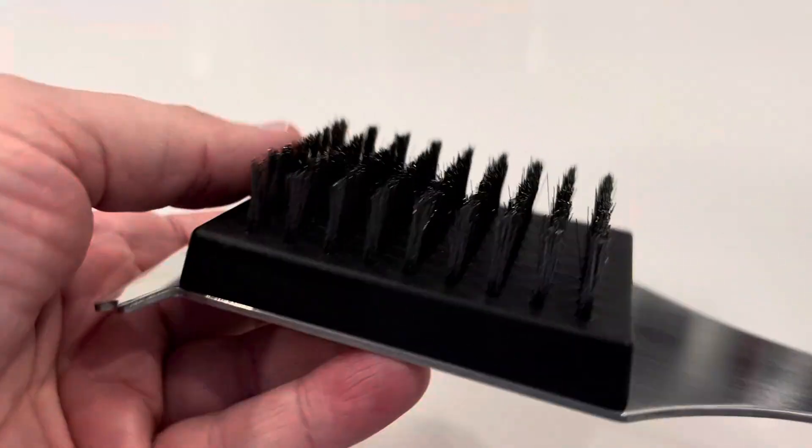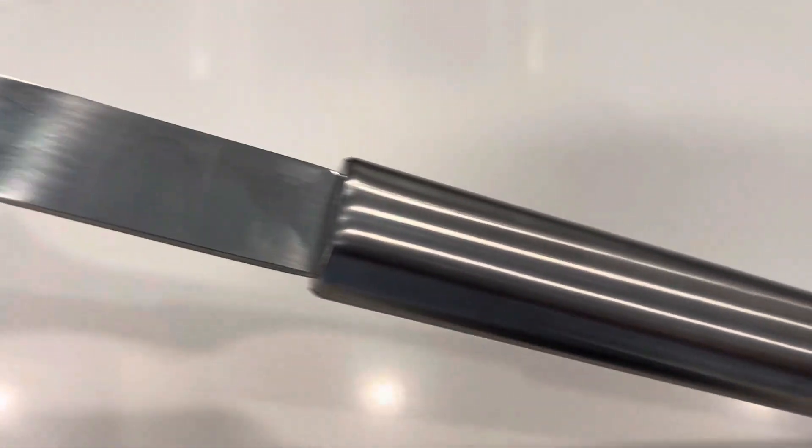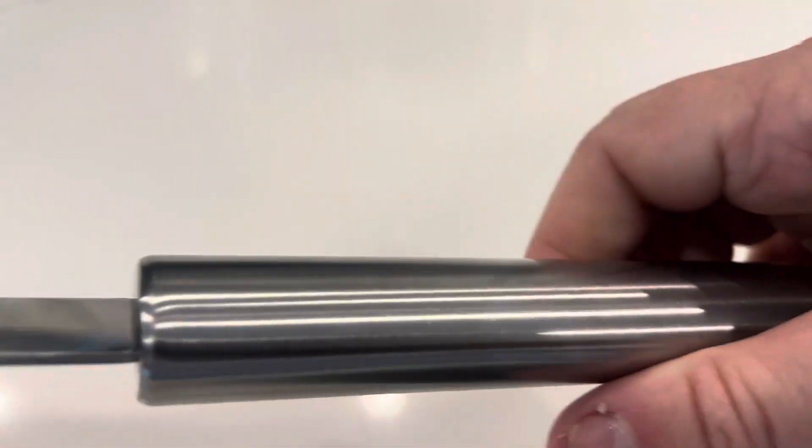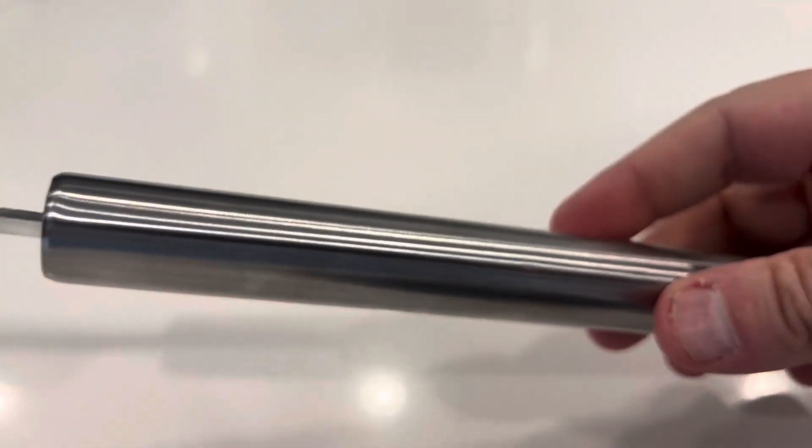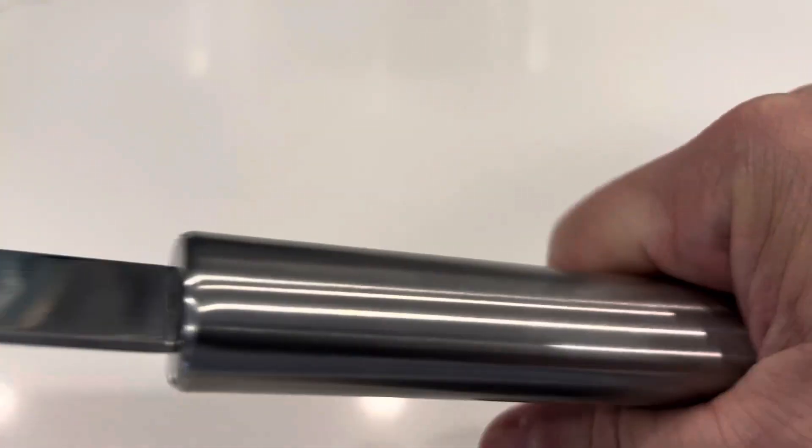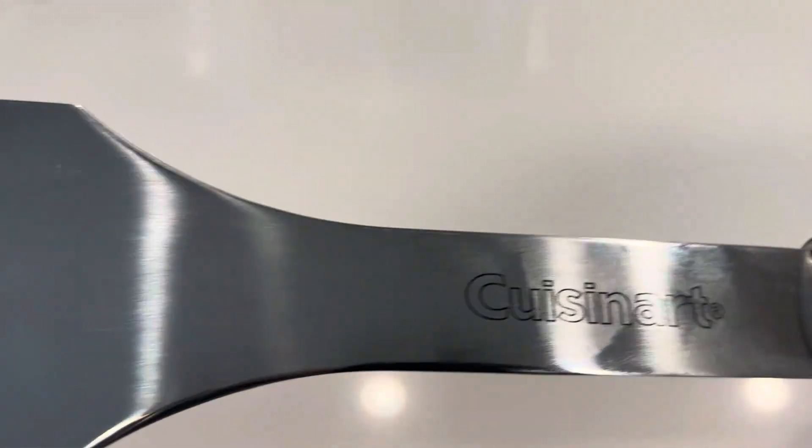I just wanted to do it up close and personal so you get a good look at it. So you've got this handle. It's not completely round. It's kind of oval-shaped, which makes it really comfortable in your grip, so you can get a good grip on it.